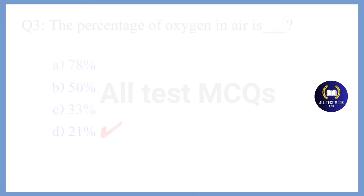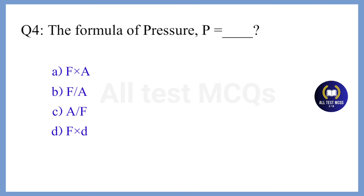Question 4. The formula of pressure P is equal to — the correct answer is Option B.